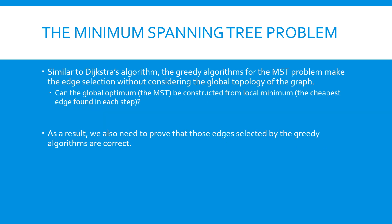While it is intuitive to associate selecting the cheapest edge with the goal of constructing the minimum spanning tree, it is not immediately clear whether these resulting greedy algorithms are correct. All greedy algorithms make decisions about which edges to select without considering the entire graph. Given that the MST is defined based on the entire graph, the question arises whether such a global optimum can be achieved by choosing local minimum edges. This concern is also present in Dijkstra's algorithm for solving the shortest path problem.